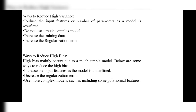Another way to reduce high variance is to increase the regularization term. This regularization term was discussed in the linear regression model — it involves assuming values that are unknown and keeping them aside to estimate values more easily. Now, for ways to reduce high bias: high bias mainly occurs due to a much simple model.